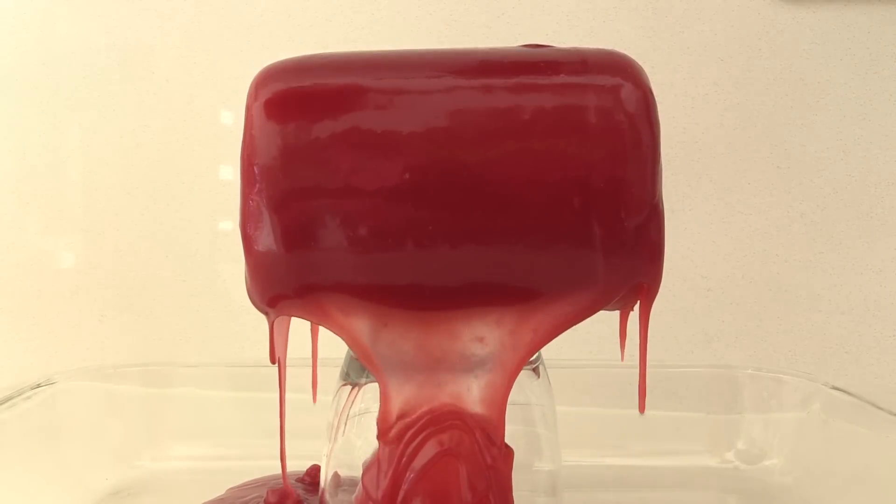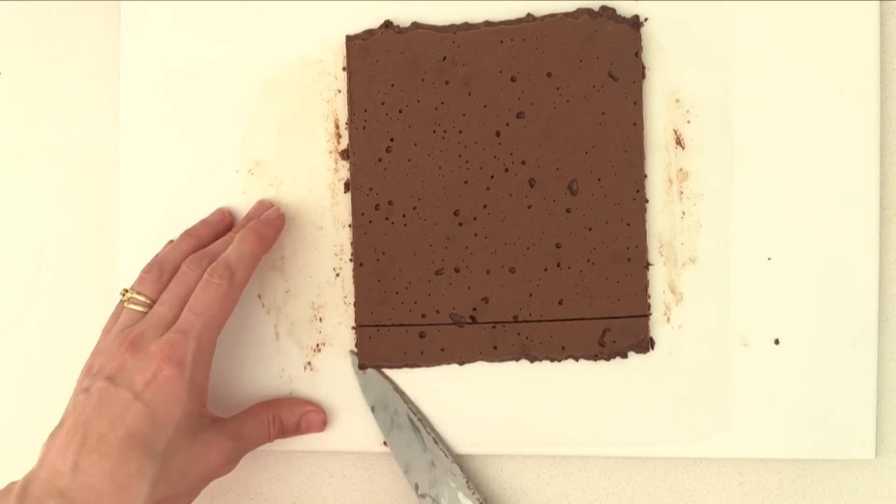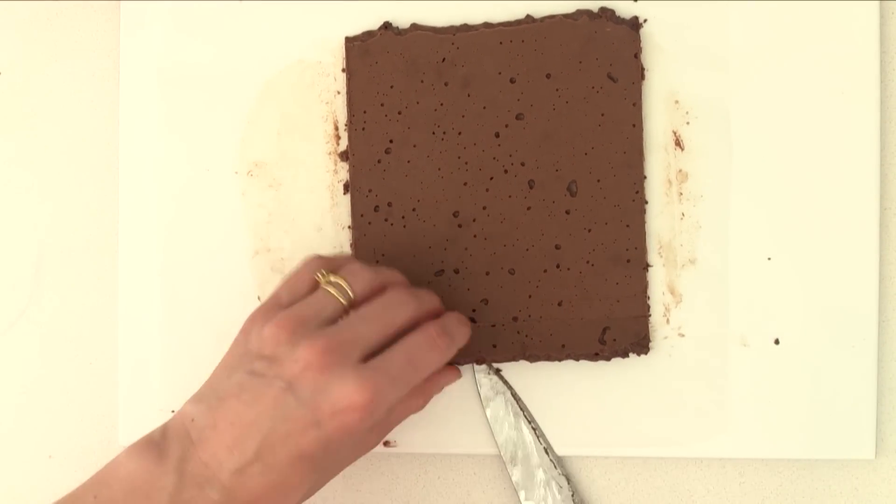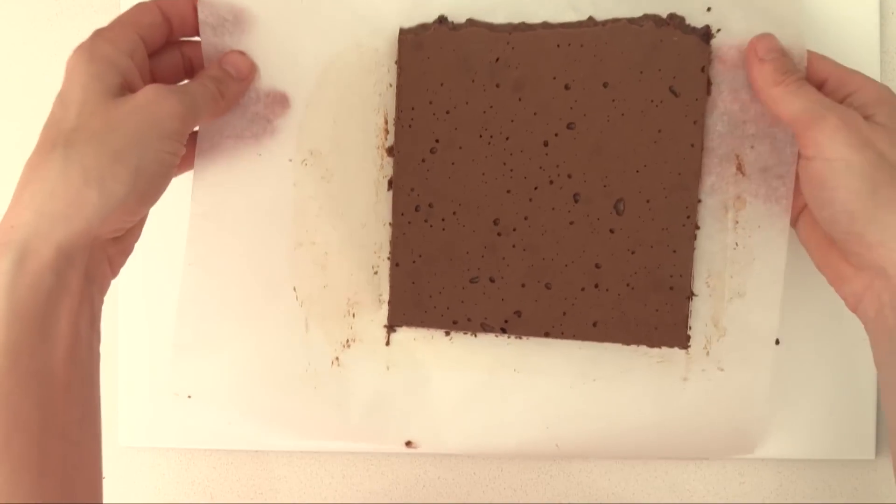Leave the glaze to firm up a little and while you are doing that trim the chocolate base to about the right size. We can trim more off later so it is better to make it slightly bigger than you think you will need and then cut it off once you have the dessert on top.